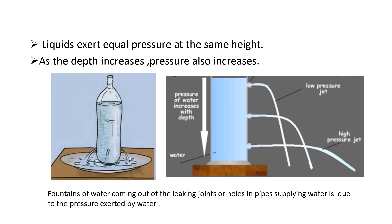The third point is: liquid exerts equal pressure at the same height. We already discussed that pressure increases with the height of the water column. In this figure, if we make two or three holes at the same height on a bottle filled with water, water streams will come out from all the holes. We can see that the distance of the water jets from the bottle is almost the same on all sides, showing that the pressure exerted at the same height is equal.